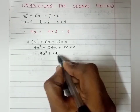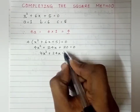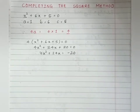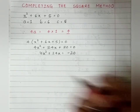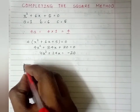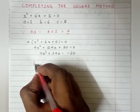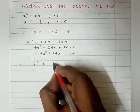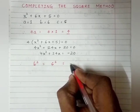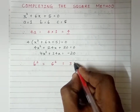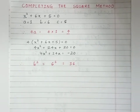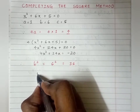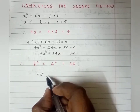Now shift the +20 to the RHS. What you get is 4x² + 24x = -20. Now the second step is to find out the value of b². Here b is 6, so b² = 6² = 36.